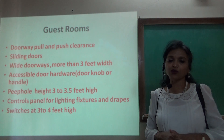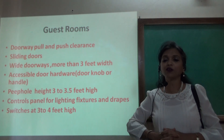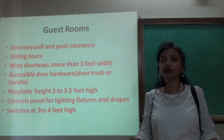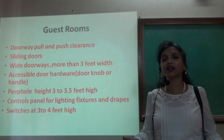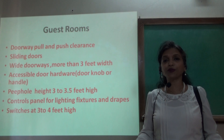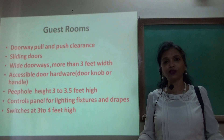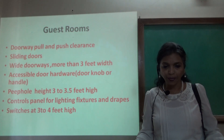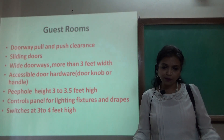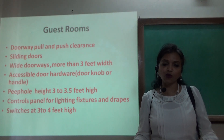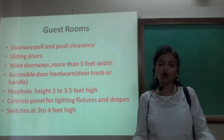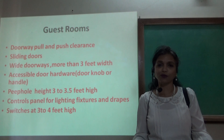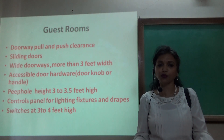Wide doorways of more than 3 feet width are required. For a regular door entrance we plan at 3 feet, but here the width should be more — from 3 feet to 4 feet, but nothing less than 3 feet. Accessible door hardware such as a doorknob or handle should be at a lower level, easily accessible by a guest seated in a wheelchair.